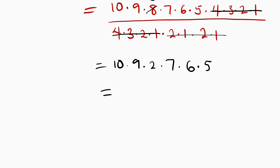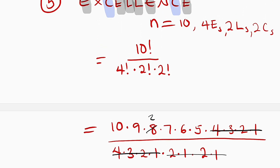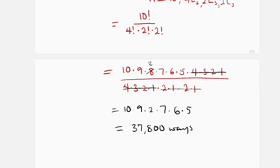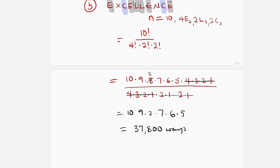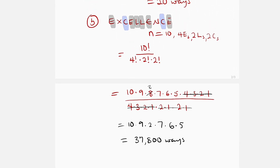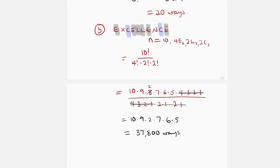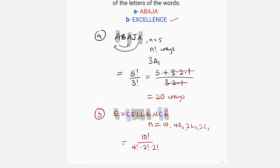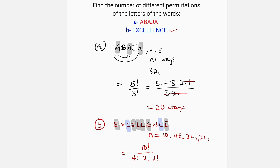Use your calculator to multiply all these numbers together. The total number of ways we can arrange the word EXCELLENCE is equal to thirty-seven thousand eight hundred different ways. That is all I have for you today. Thank you for watching — do share with your learning colleagues and don't forget to subscribe to my YouTube channel for more exciting videos. Bye bye.